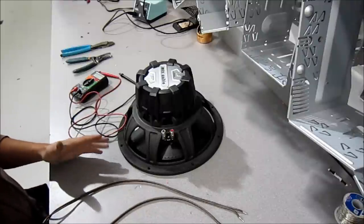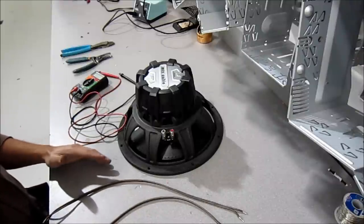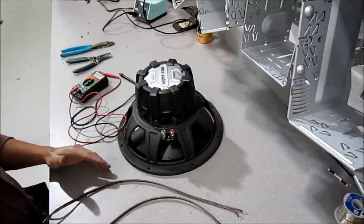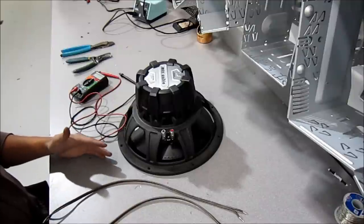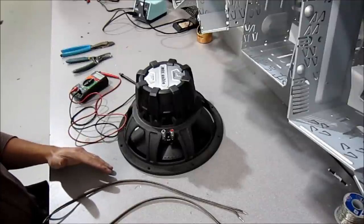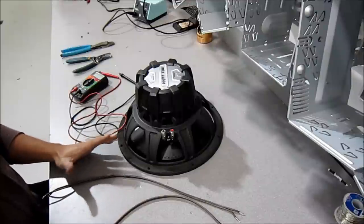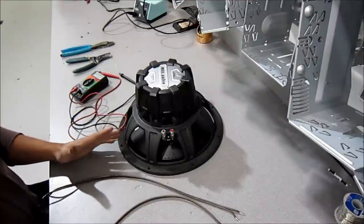Now in this scenario, you have a monoblock amplifier that only has one speaker input, so you can't bridge it. So what you have to do is lower the impedance at the subwoofer itself to maximize the amount of power you want to get out of this amplifier. So you're going to run these speaker terminals in parallel.